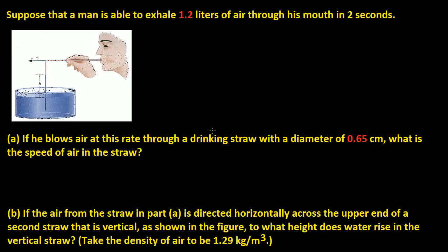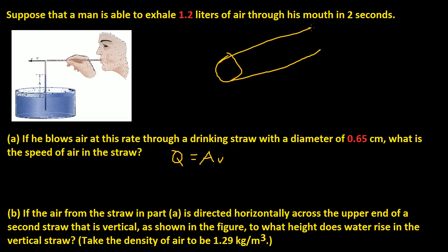Let me tell you how to do this problem first, and then you can either pause the video and try it yourself, or keep watching for the solution. The way to do this is to use the flow rate. Flow rate Q is equal to area times velocity. The area is the cross-sectional area of the straw, and the velocity is how fast he's blowing — that's what we're solving for.